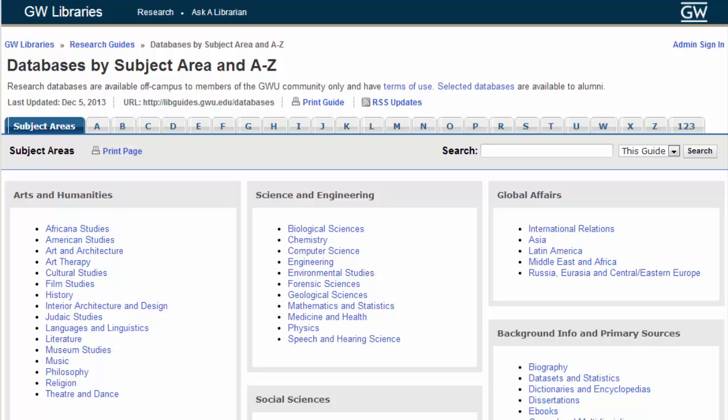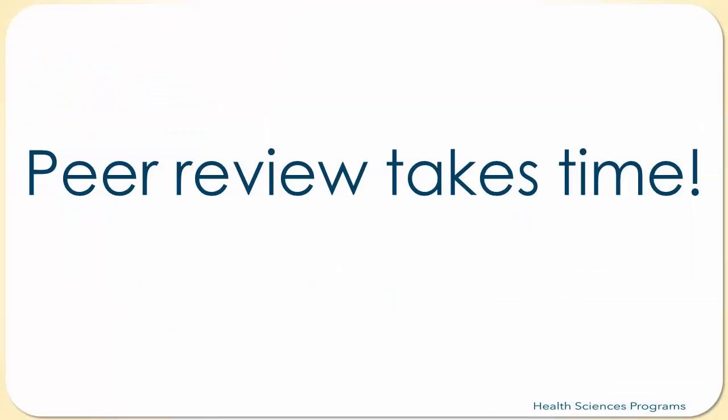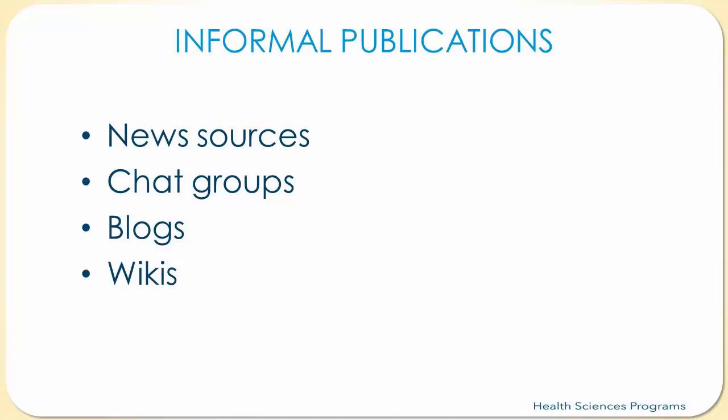We encourage you to explore the options available through the GW libraries. For traditional peer-reviewed academic journals, the process of research, peer review, and publication takes time, and there can be a significant delay before information is published. For this reason, new and emerging issues may have a limited presence in journals. In this case, informal publications can help supplement existing academic research.